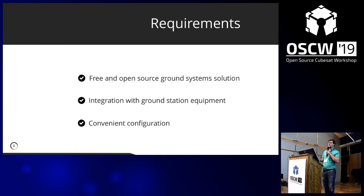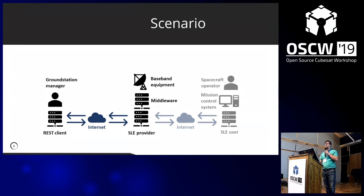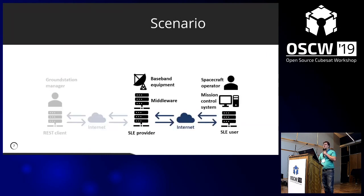Before starting the project, we defined some requirements: it should be free and open source for everyone, easily integratable with commonly available ground station equipment, and have convenient configuration. In our application scenario, we have a ground station manager, a ground station, and a spacecraft operator. Before a satellite passes over the ground station, the ground station manager schedules the pass using our REST API. Then just before the satellite passes, the spacecraft operator uses the SLE user to connect to the SLE provider, and during the pass can receive telemetry and send telecommands.